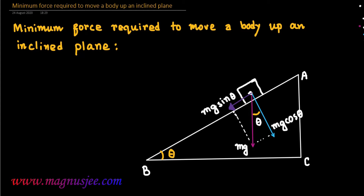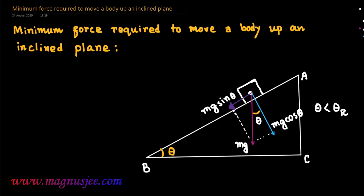The component mg sin theta acts parallel to the inclined plane AB. Since the angle of inclination theta is less than the angle of repose, the body remains at rest on the inclined plane and will not move under the action of mg sin theta. An external force Fex is then applied on the body to move it up the inclined plane.